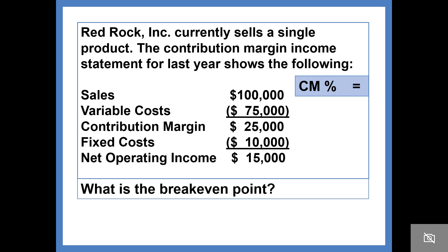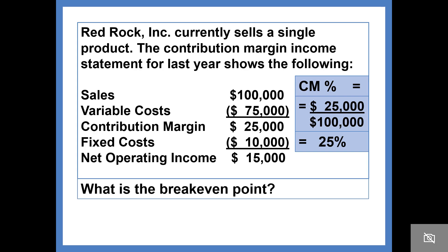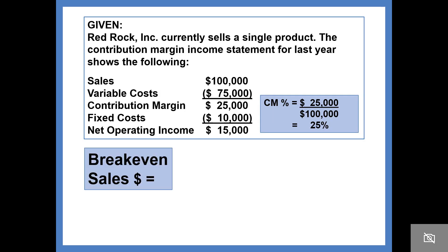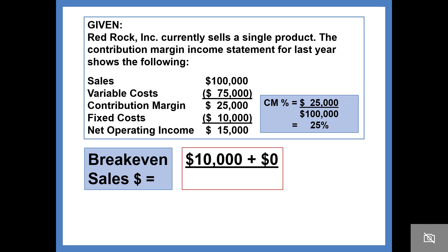The contribution margin ratio will be computed as $25,000 contribution margin divided by $100,000 of sales, or 25 percent. Now we can calculate the break-even point. Break-even sales will be fixed cost plus profit — $10,000 plus zero — divided by the contribution margin ratio, which gives you $40,000 of sales to break-even.